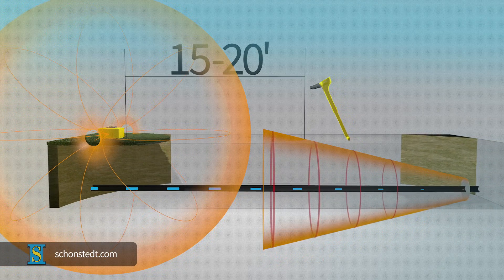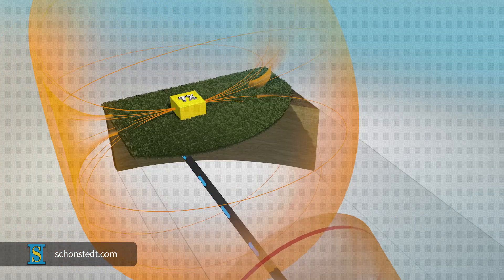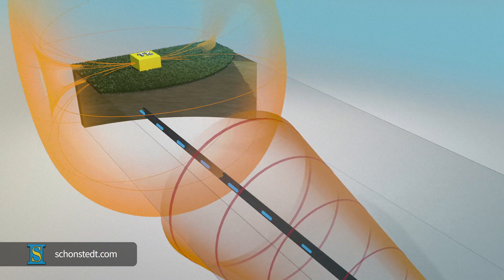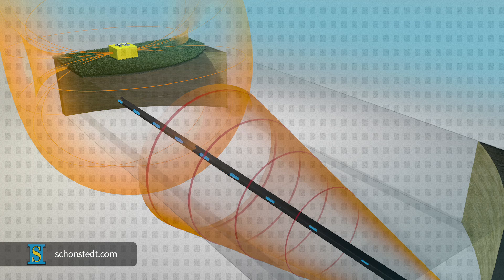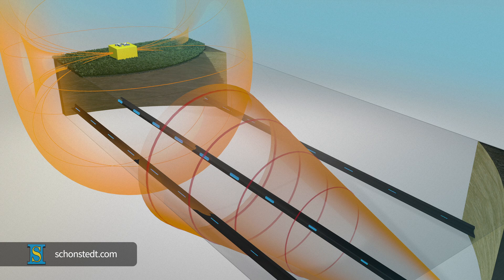If the transmitter isn't in the proper place, the signal is likely to be very weak. In addition, other nearby pipes or cables can complicate the locating process, because the signal will be induced in them as well.